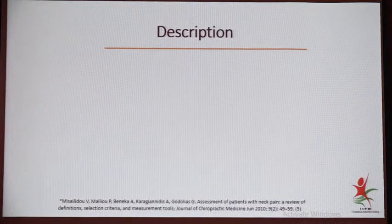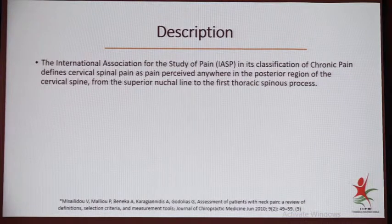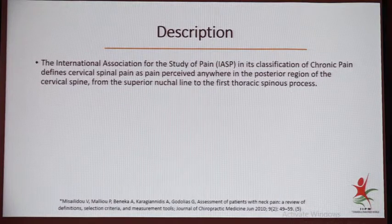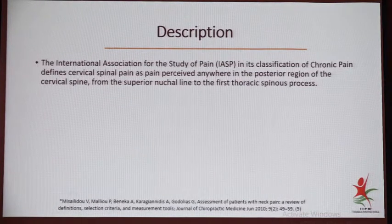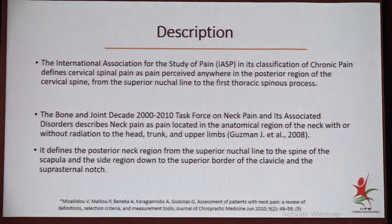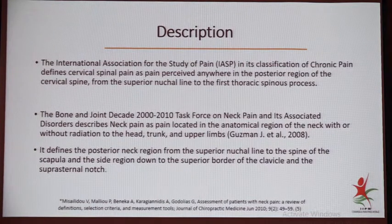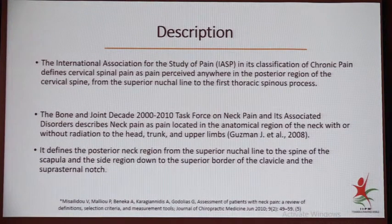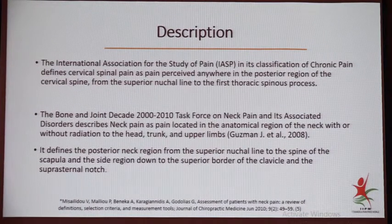What is neck pain? I couldn't find any classical definition. Only a description exists. The IASP described cervical pain as perceived anywhere in the posterior region of the cervical spine, from the posterior nuchal line to the first thoracic spinous process area. The Bone and Joint Decade described it anatomically as from the superior nuchal line to the spine of the scapula, down to the superior border of the clavicle — giving the area only, not a classical definition.